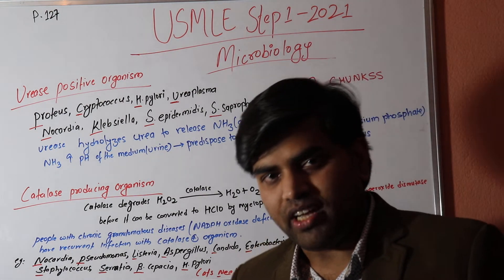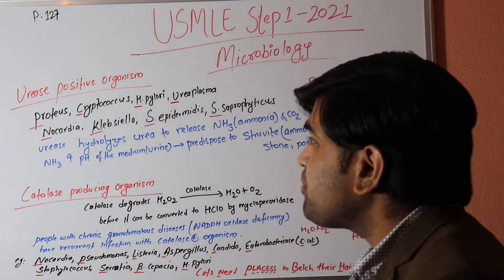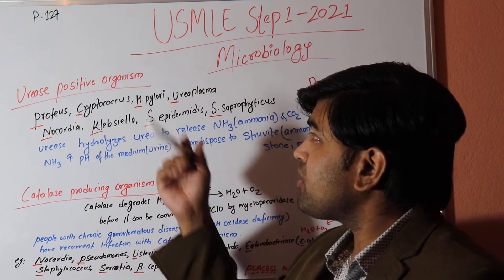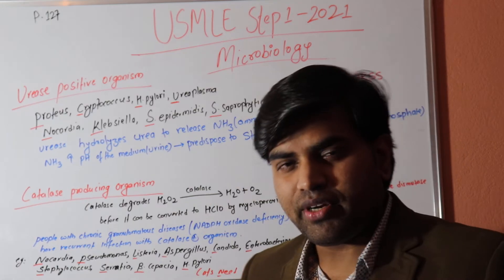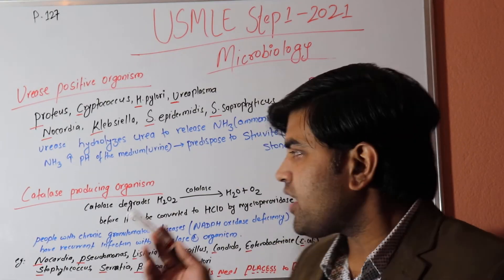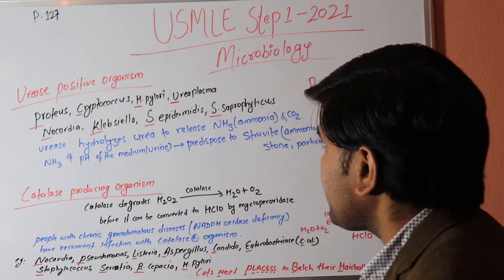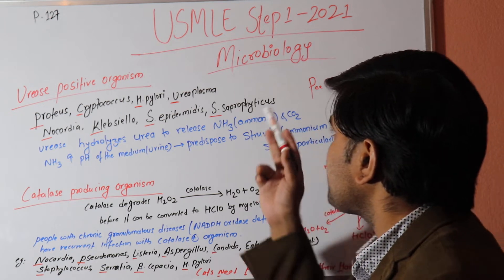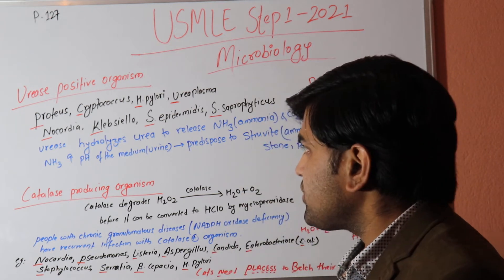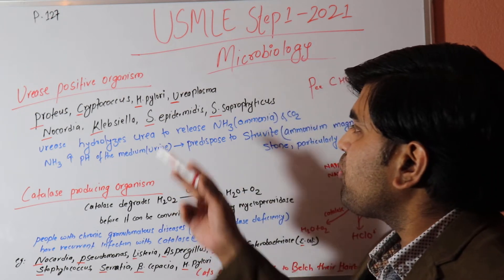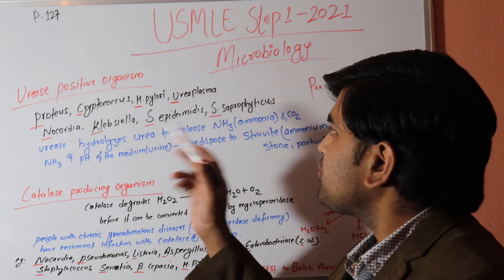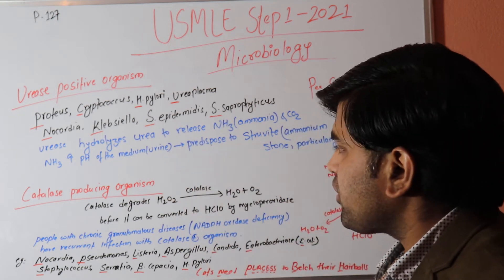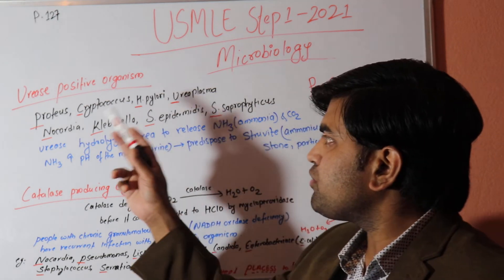Hello and welcome. Today we are on page 127 of the USMLE Step 1 2021 microbiology revision section. We will be discussing two clinically important topics: urease-positive organisms and catalase-producing organisms.